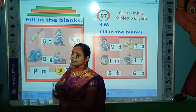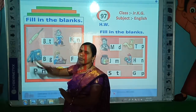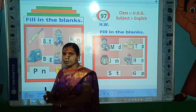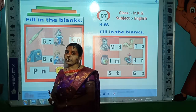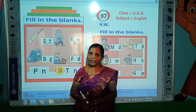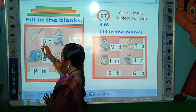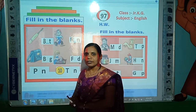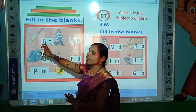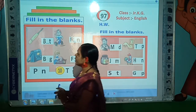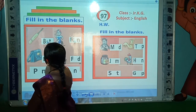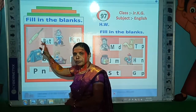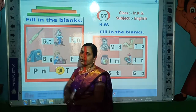Now look here. What picture is this? Yes, this is the picture of BAT. What is the spelling of BAT? Correct. B-A-T, BAT. Now look here — which letter is missing here? Yes, A is the missing letter. So write here A. Now read: B-A-T, BAT. B-A-T, BAT.